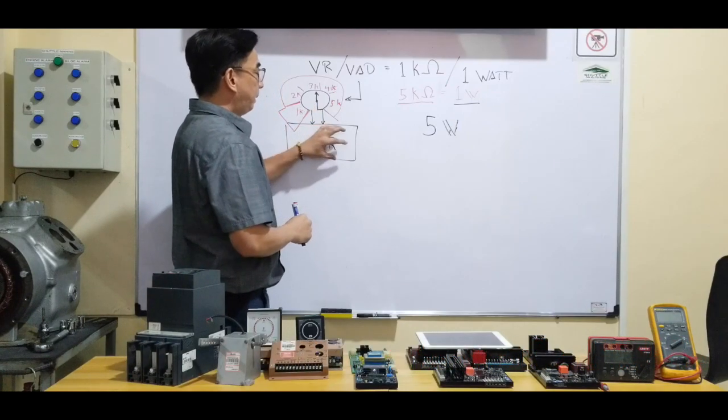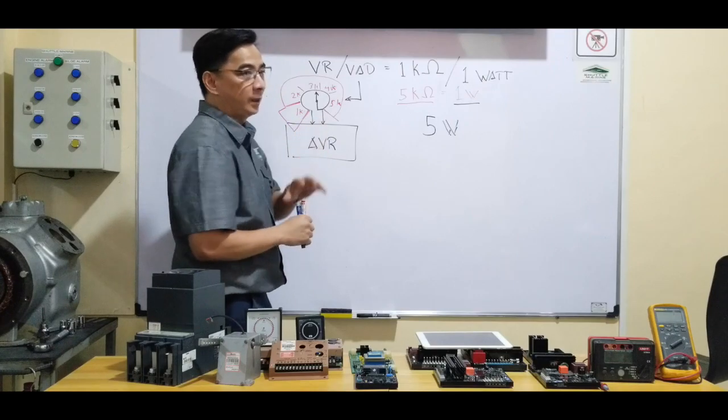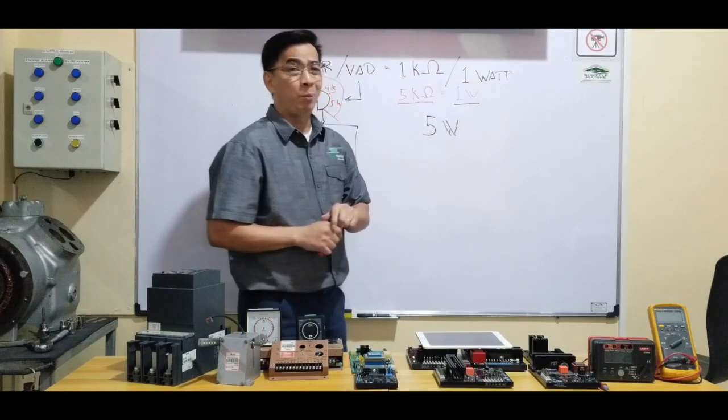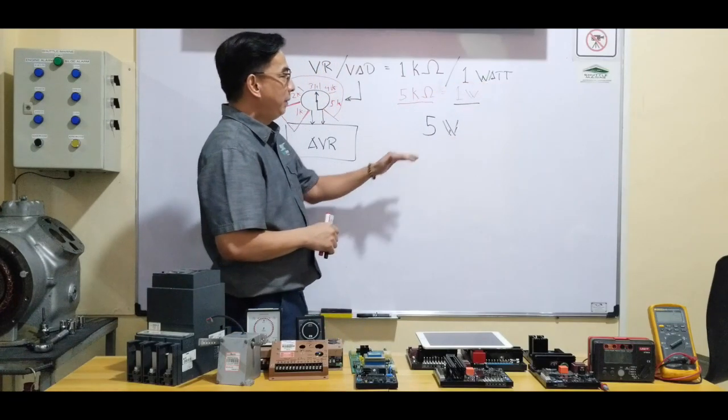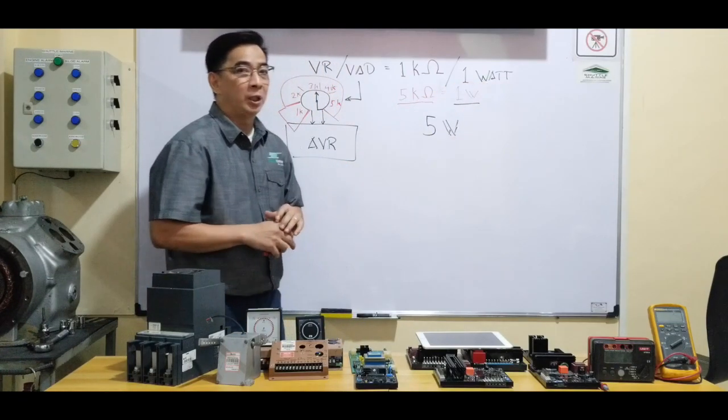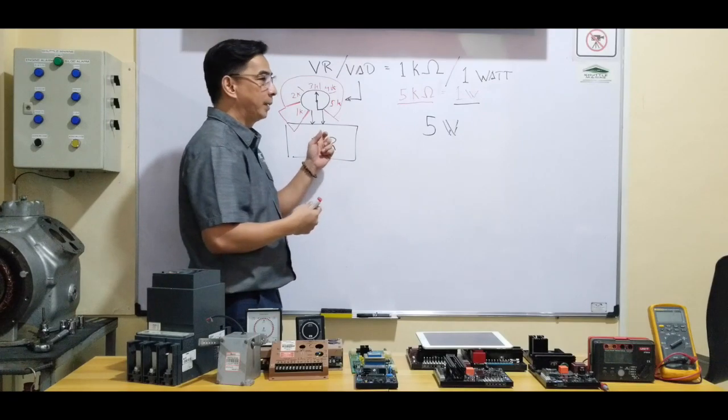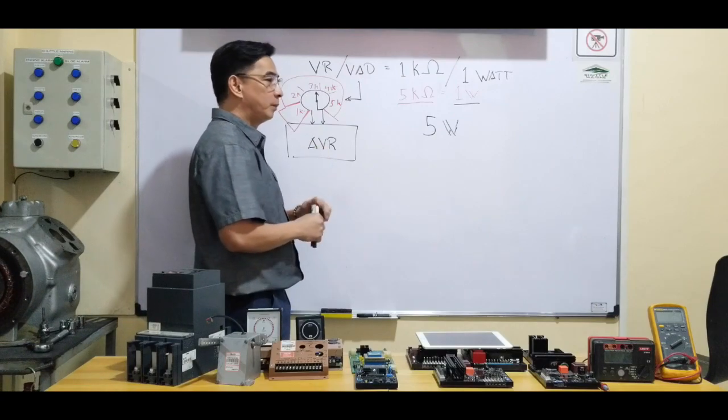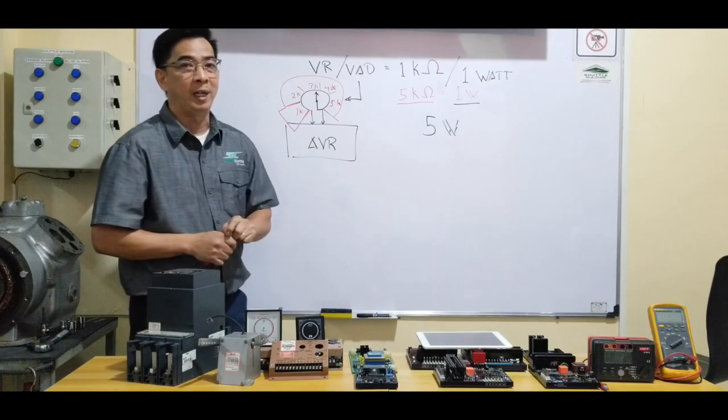Because the circuit of the AVR can only work on a 1 watt potentiometer. So if I'll be using a 5 watt potentiometer, it will generate a higher current inside the system, the electronic circuit. So it might cause malfunction on the AVR.